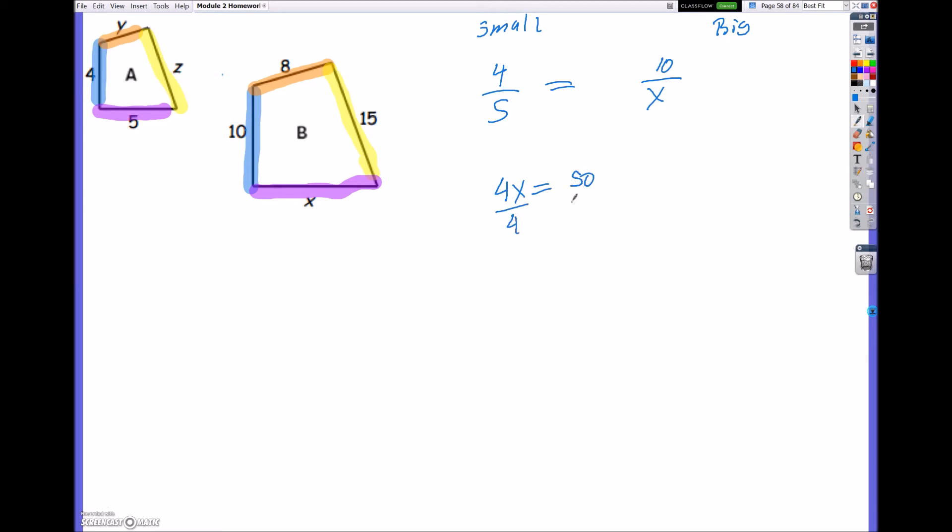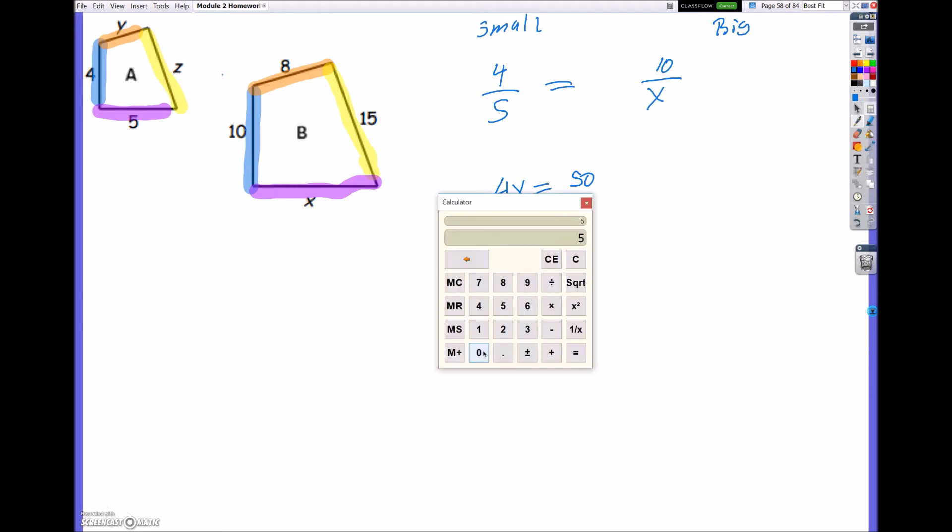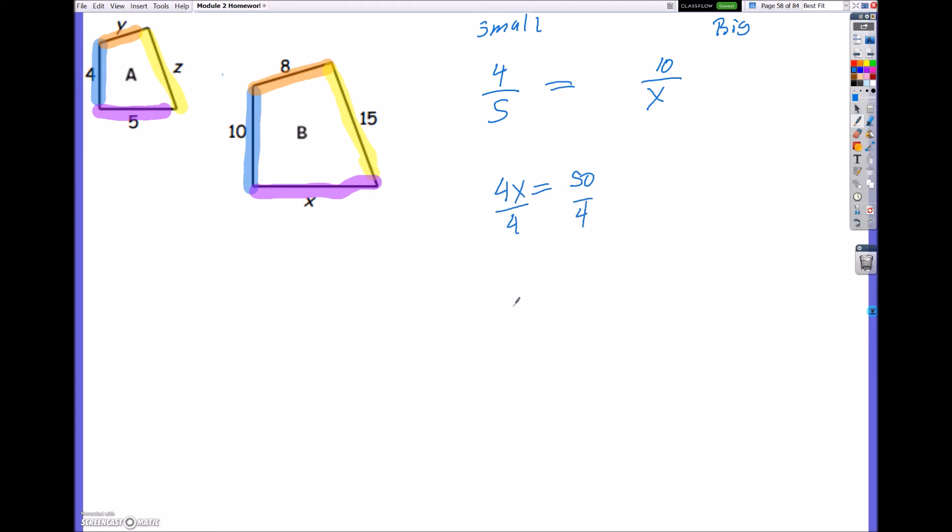So now when I cross multiply, I'm going to have 4x is equal to 50. And when I divide both sides by 4, I believe that's going to be 12.5. Let me bring up my calculator and double check really quickly. So 50 divided by 4 equals 12.5. Yes. So x equals 12.5.